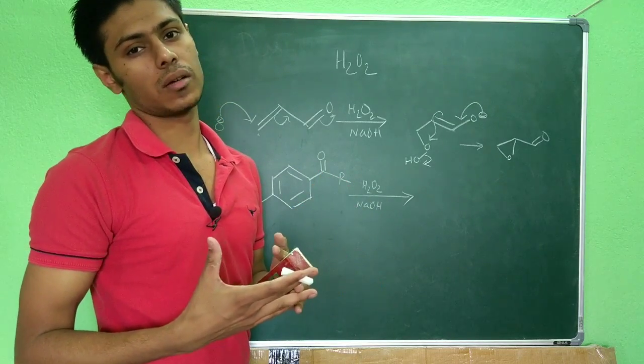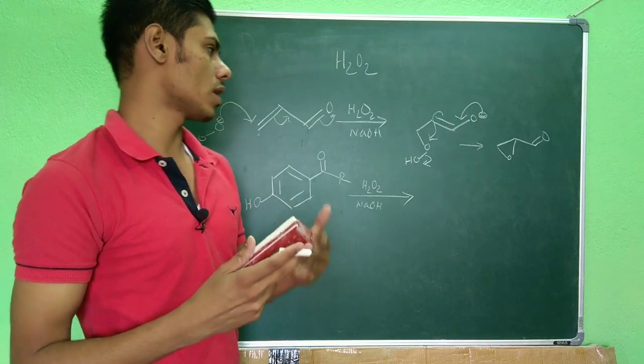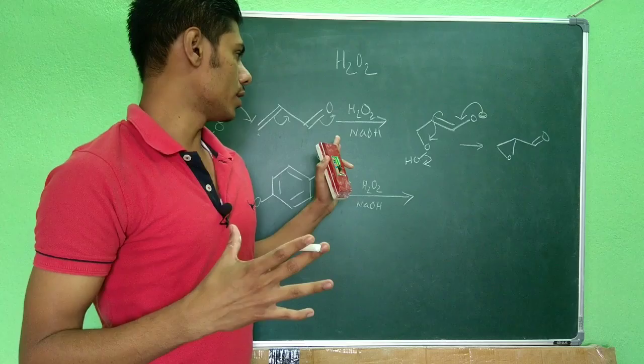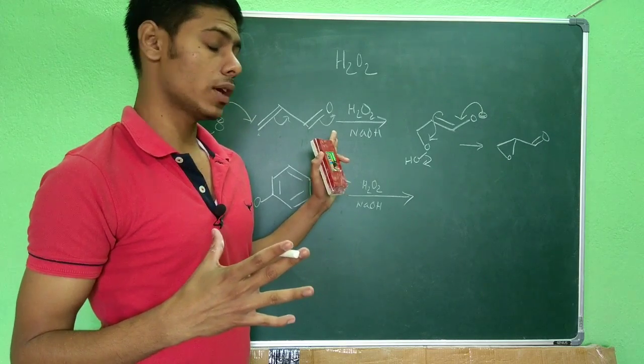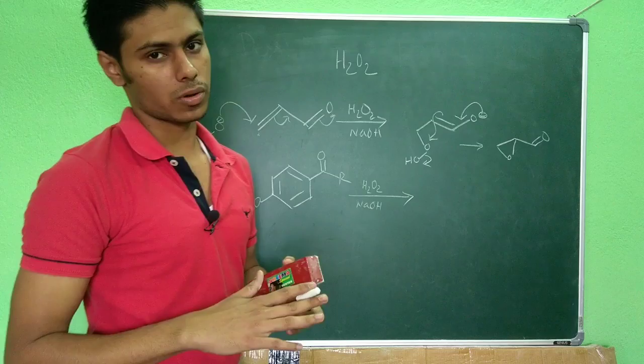When you have electron deficient double bond, for example here the alpha beta unsaturated carbonyl compounds, then we have to use a reagent which is a nucleophile. So H2O2 minus is a nucleophile. So this is the nucleophilic epoxidation.